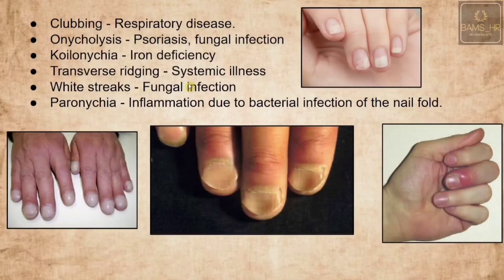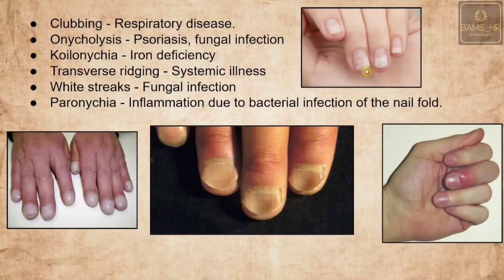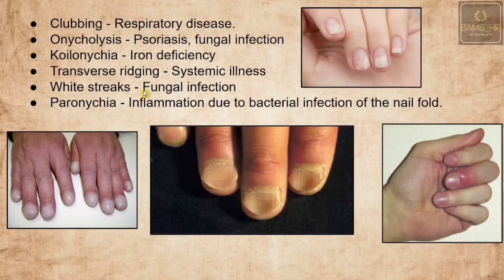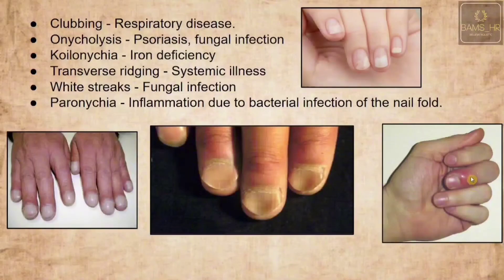Other clinical aspects of nails include: clubbing — swollen extremities at the last part of the nails, mainly due to respiratory disease; onychosis — psoriasis or fungal infection of the nail; koilonychia — due to iron deficiency; transverse ridging in systemic illness; white streaks — representation of fungal infection on the upper nail; and paronychia — inflammation of the nail fold due to bacterial infection.